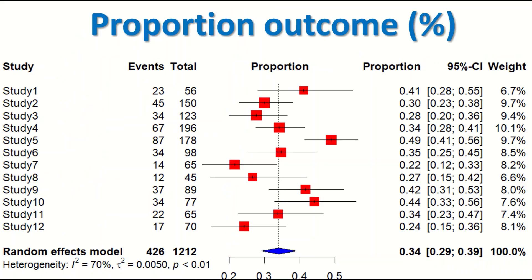Once the proportional meta-analysis is performed, an output is generated which is a forest plot. This forest plot has three sections: the first section is descriptive statistics, the second is diagrammatic representation, and the third is the overall estimate of the effect size and the heterogeneity test.